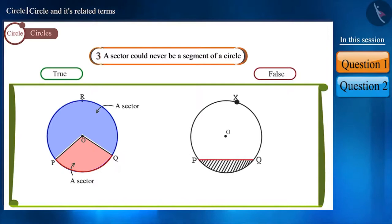And in any circle, the region between a chord and either of its arcs is called a segment of the circle.